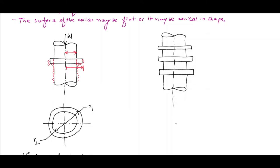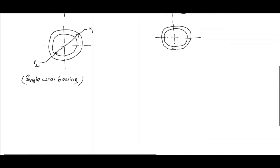The inner diameter is the shaft diameter and the outer diameter is the collar diameter. R1 is the outer radius and R2 is the inner radius. This is known as a multiple collar bearing.